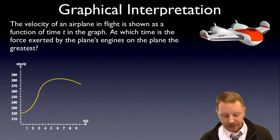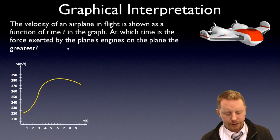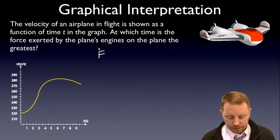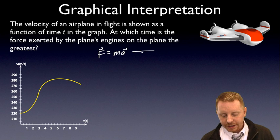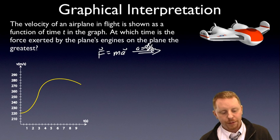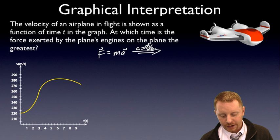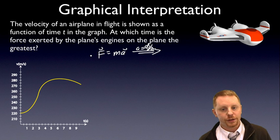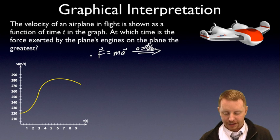We've got a velocity versus time graph, and if we want the greatest force, remember that force is equal to mass times acceleration. But acceleration is the derivative of velocity, or the slope of the velocity time graph. So if I want the greatest acceleration to give me the greatest force, I need the greatest slope from the velocity time graph.